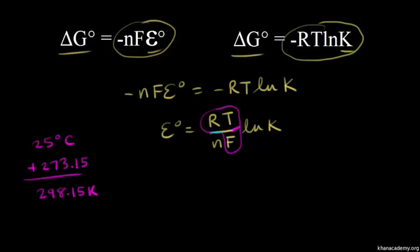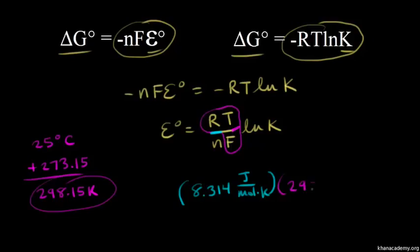R is the gas constant, equal to 8.314 joules over mole times Kelvin. We're gonna multiply that by our absolute temperature, which was 298.15 Kelvin.